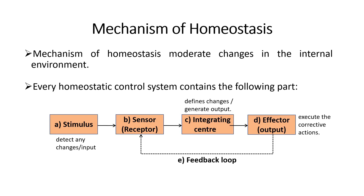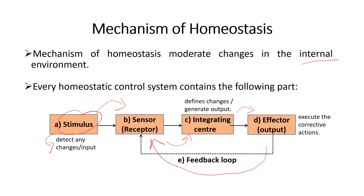The mechanism of homeostasis moderates changes in the internal environment. Every homeostatic control system contains the following parts: the stimulus, which detects any changes and is referred to as the input; the receptor, which sends the stimulus to the integrating center, where changes are defined and output is generated; and the effector, which executes the corrective action. Together, these form the feedback loop.